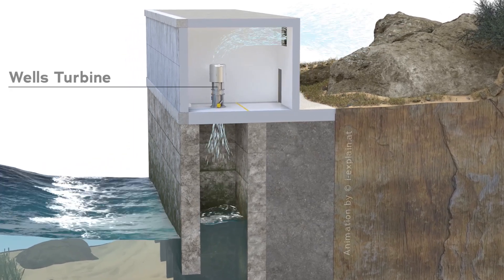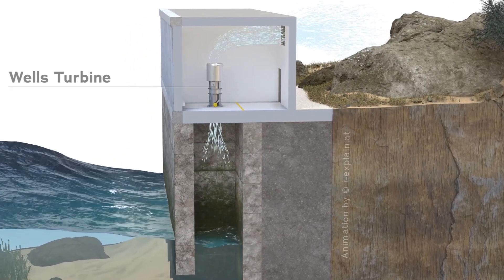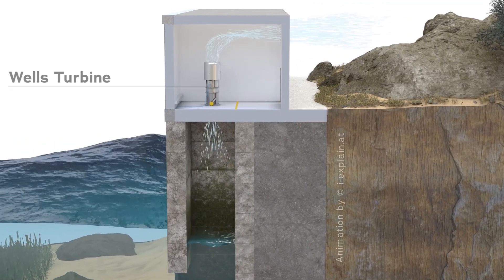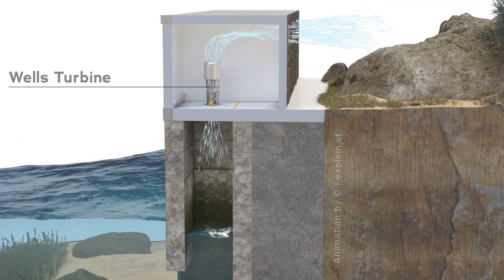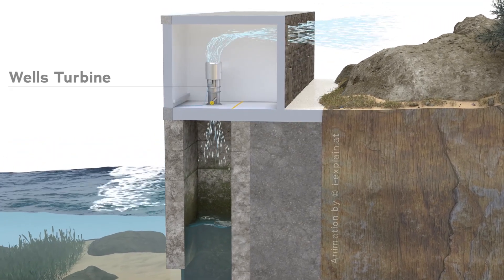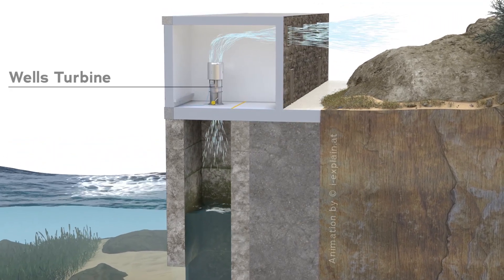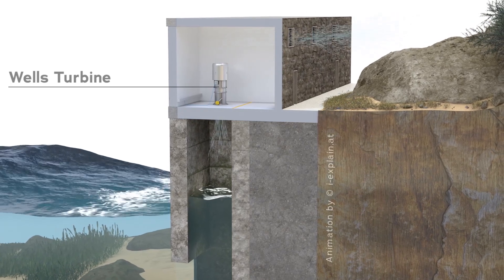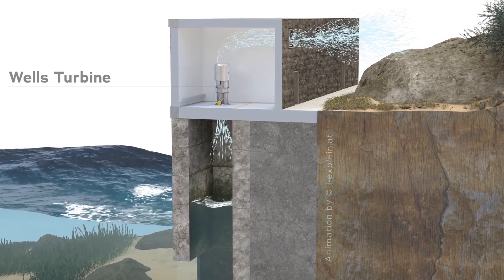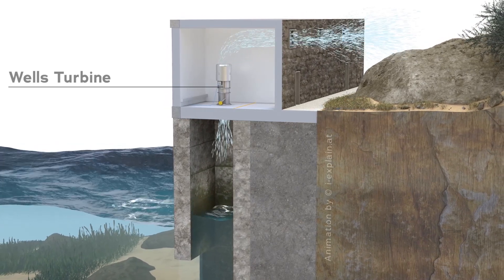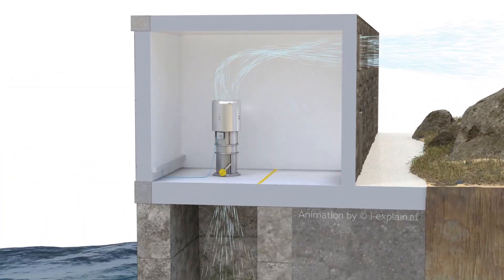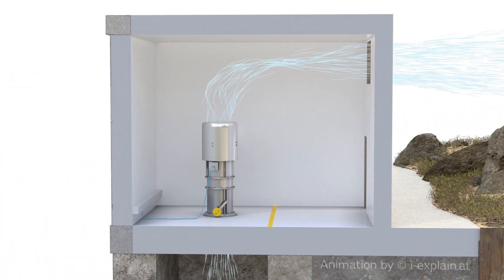The water level in the chamber rises and falls with the rhythm of the waves and acts as a piston. The air is forced forwards and backwards through the turbine, causing the rotation of the turbine. This generates mechanical energy that is converted into electricity by a generator.